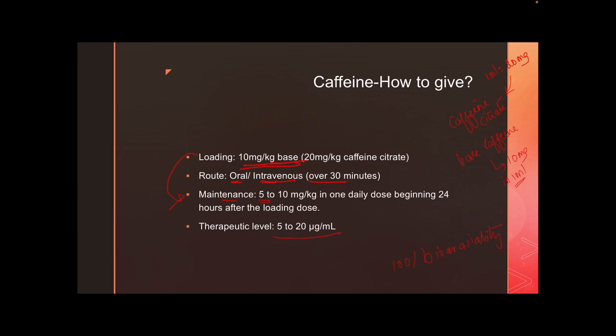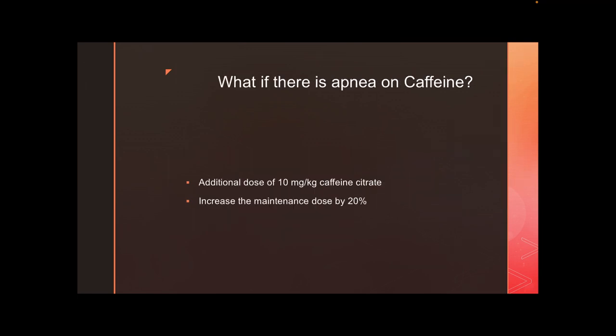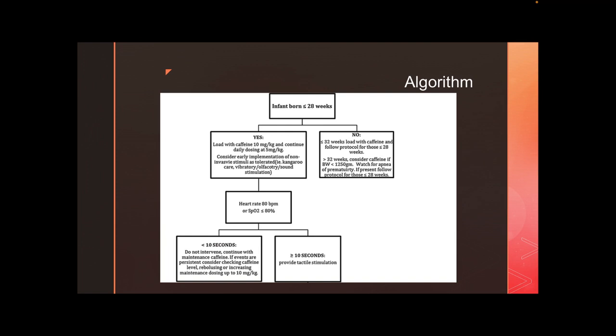There is no definite dose-response relationship for caffeine — you cannot predict exactly what will happen at a given dose. If the baby is already on caffeine and still having apneas, first recheck the dosage to confirm it is the correct base amount and appropriate for the weight. If those are correct, you can increase the maintenance dose.